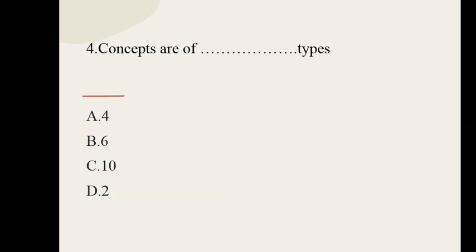Question number four. Concepts are dash types — meaning how many types of concepts are there? The options are: four, six, ten, two. And the correct option for question number four is two.